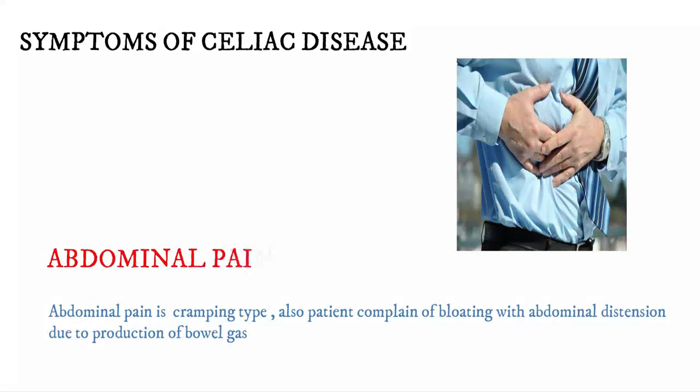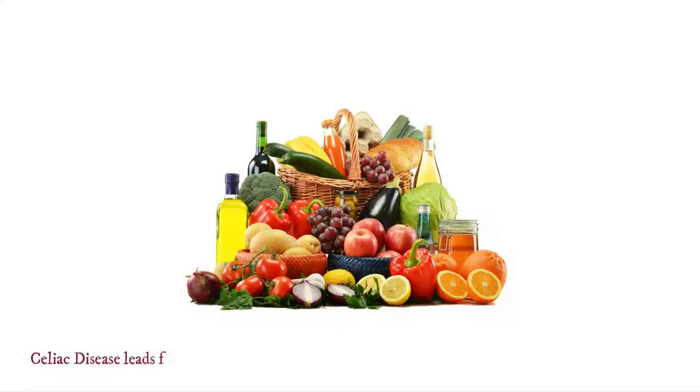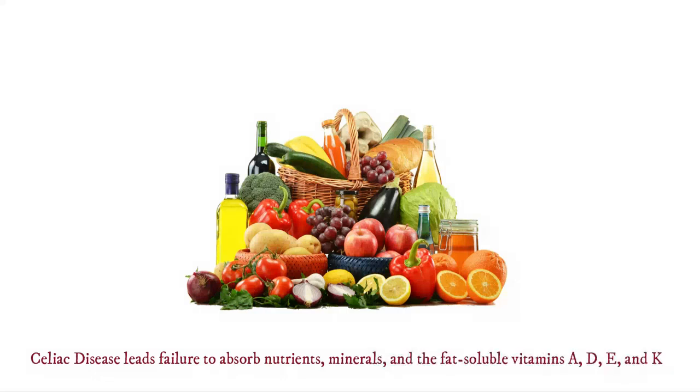Abdominal pain is of a cramping type, and patients also complain of bloating with abdominal distention due to production of bowel gas. As the disease progresses, a degree of lactose intolerance may develop. The disease leads to failure to absorb nutrients, minerals, and the fat-soluble vitamins A, D, E, and K.